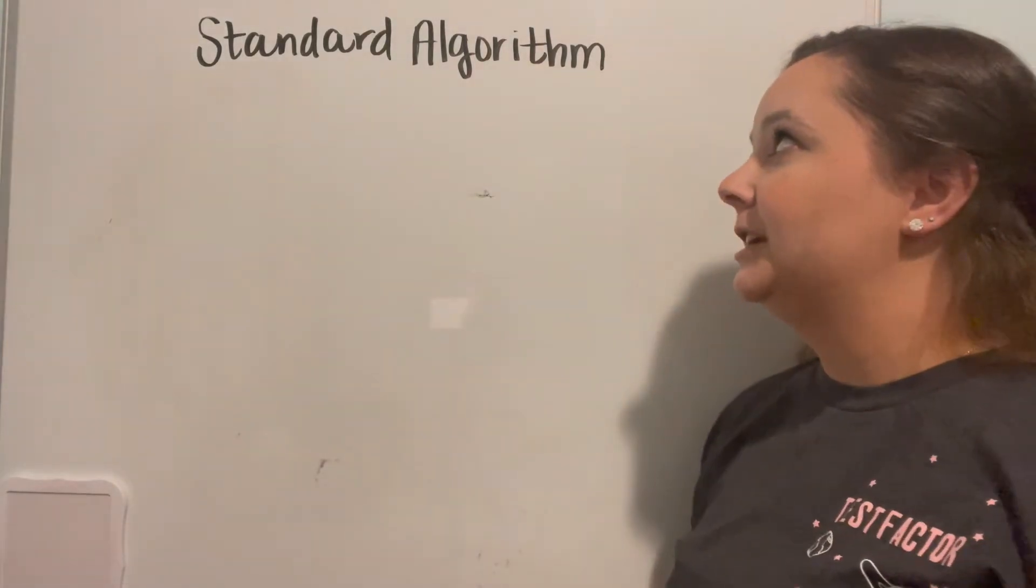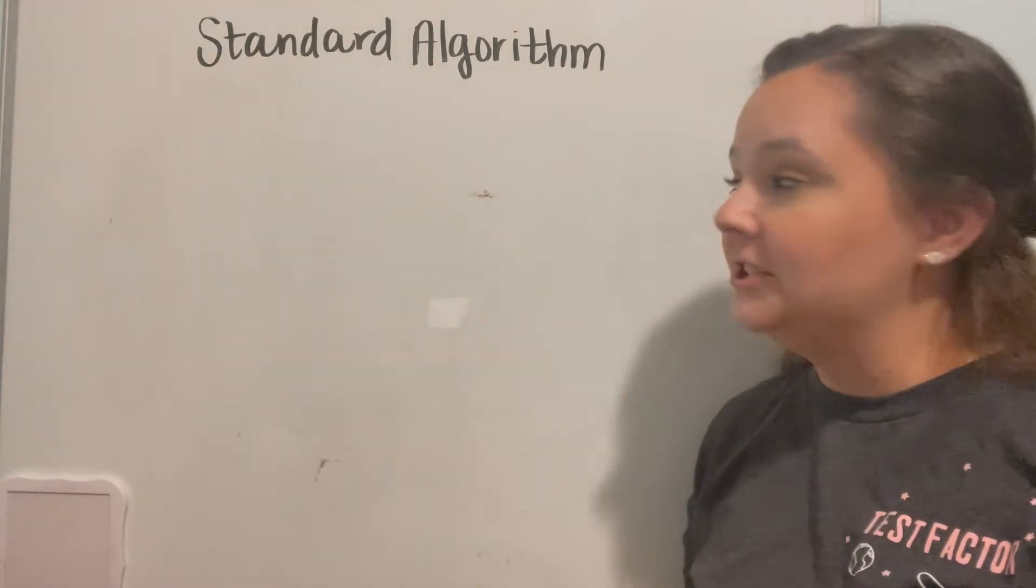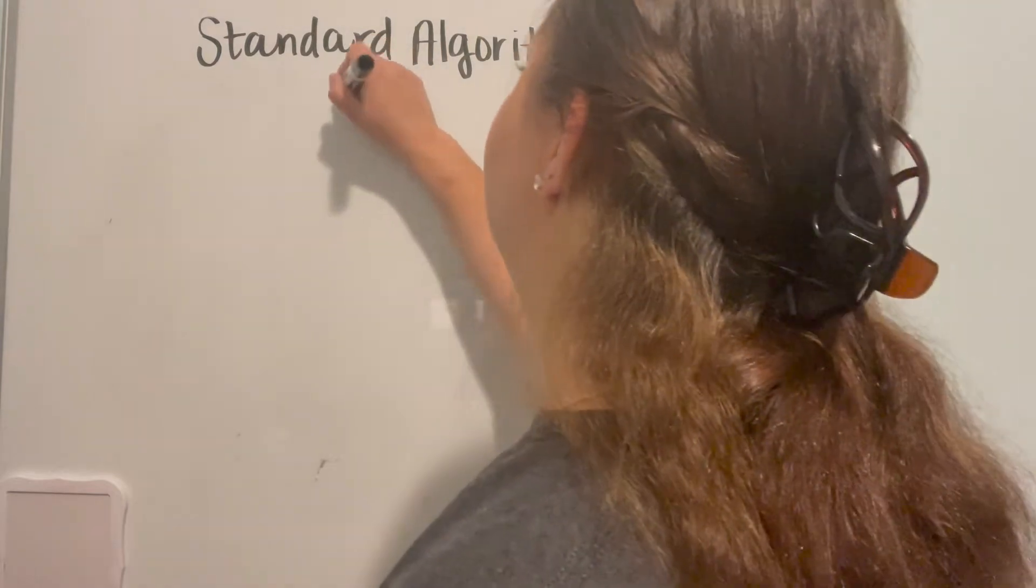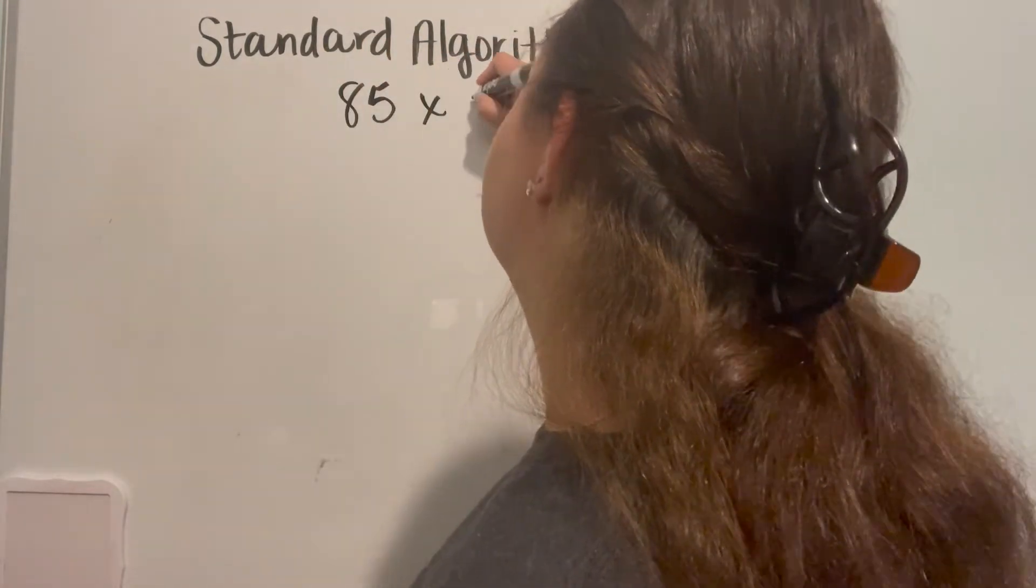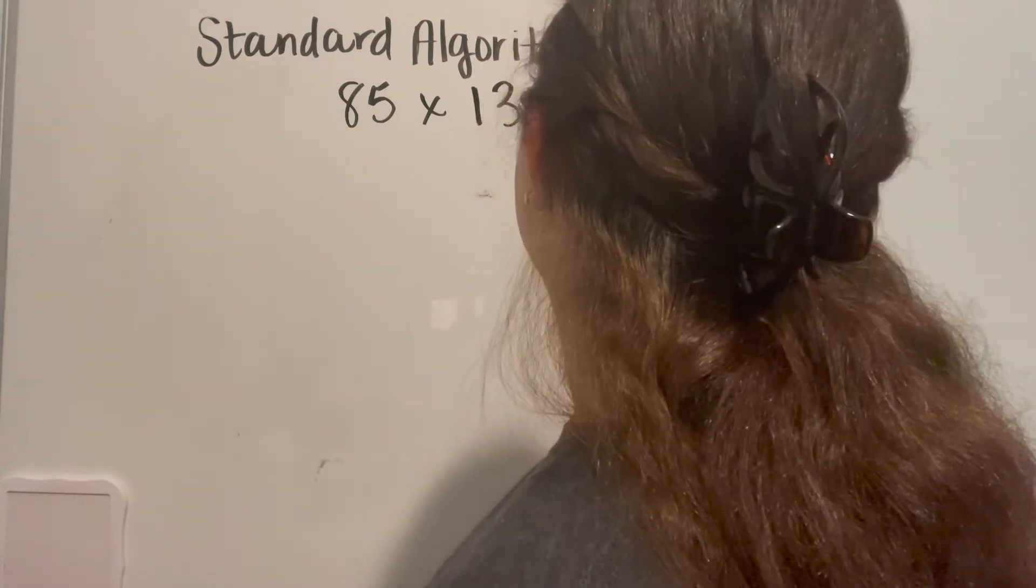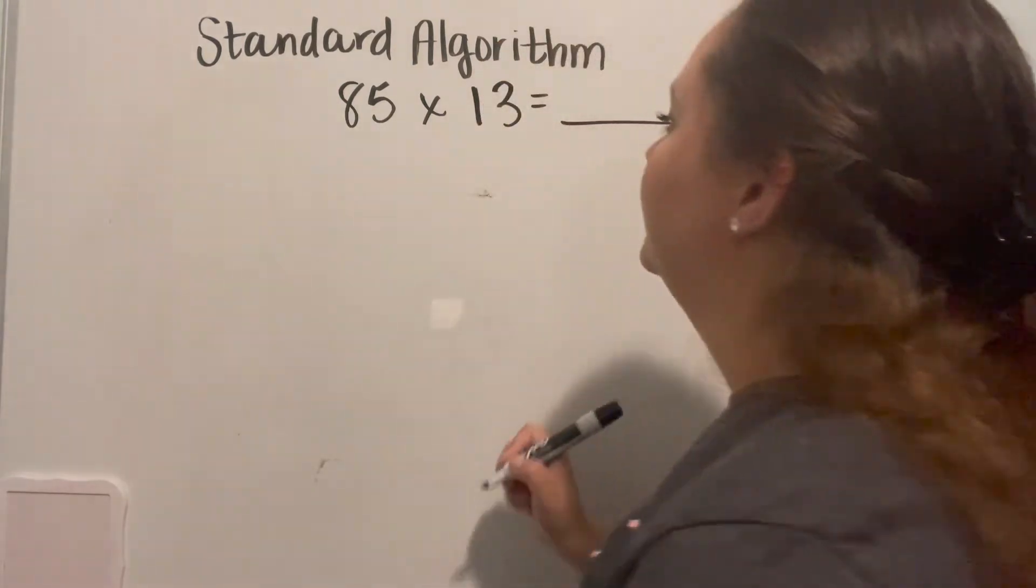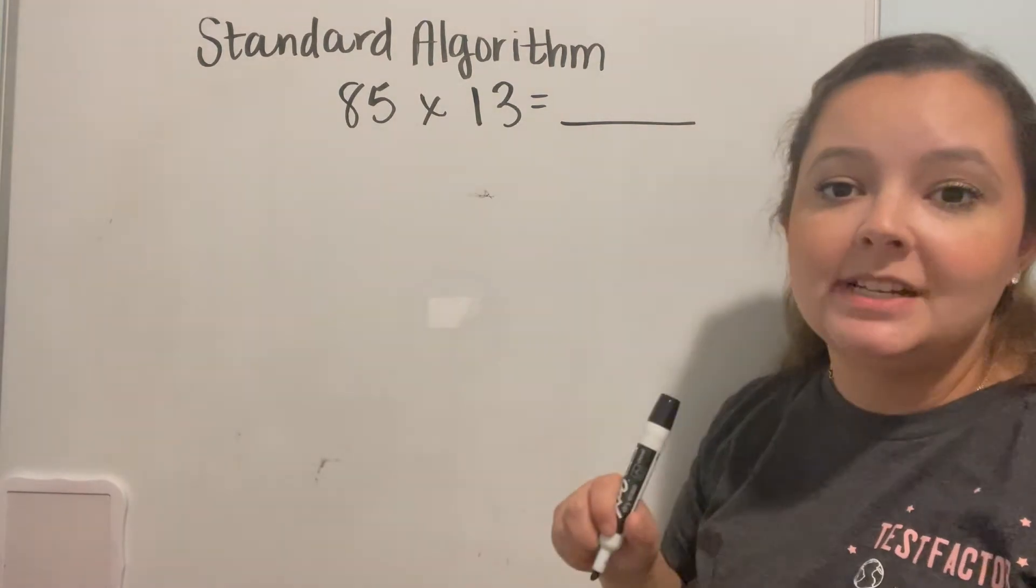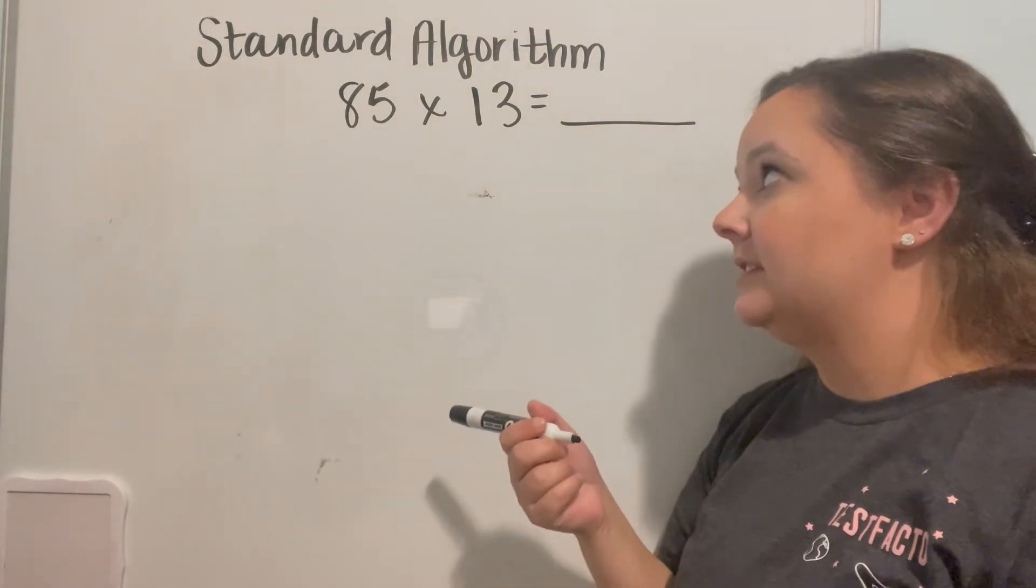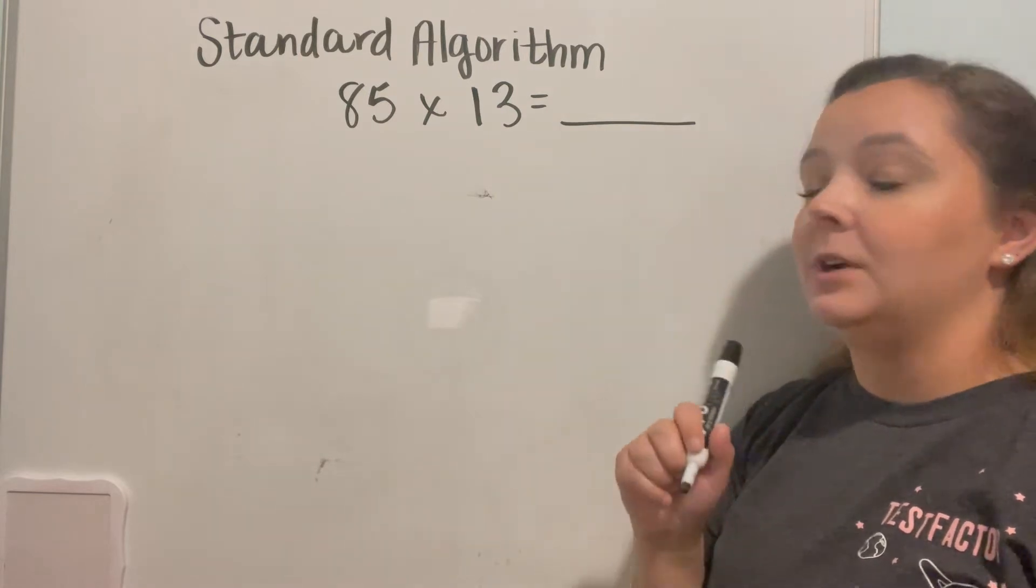Now our last one that we're going to do is a two digit by two digit number. Let's go ahead and do 85 times 13. So we have two digits by two digits here, which makes it a little bit more complicated than it was with a four digit by a one digit number.